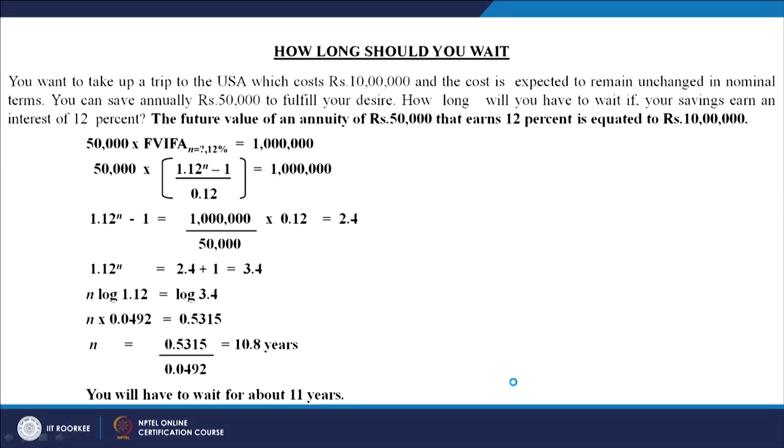The last application of the future value of annuity is 'how long should you wait.' The objective here is that you want to incur some expense or make an investment, and the total amount required is say 1 million rupees. You want to acquire something or go somewhere at a cost of 1 million rupees.